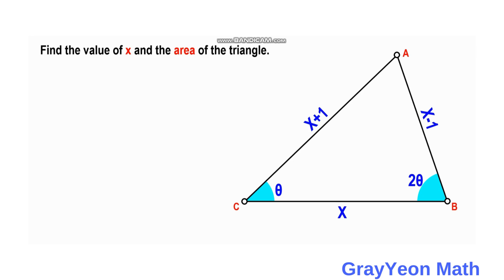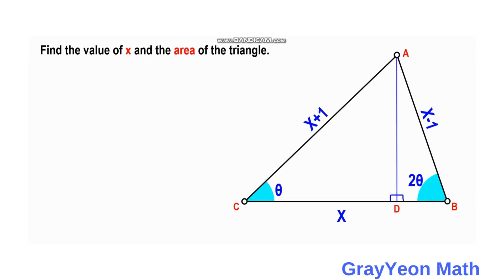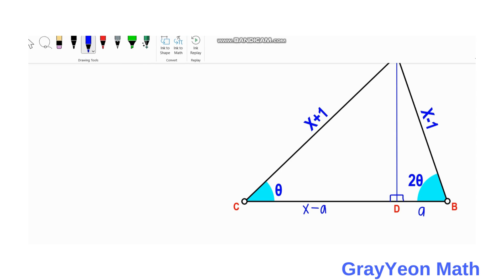First, we draw a line from point A downwards that will be perpendicular to side BC. This forms two right triangles. We call the foot of the altitude point D, giving us right triangles ADC and ABD. We label segment DB as 'a', so CD will be X minus a. We label segment AD as H, which is the common height for the two triangles.